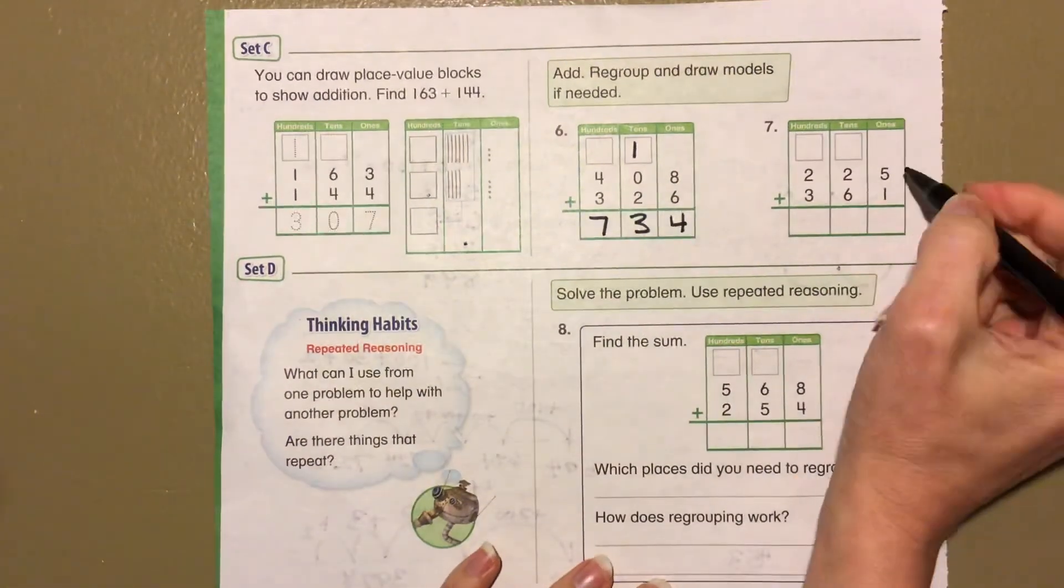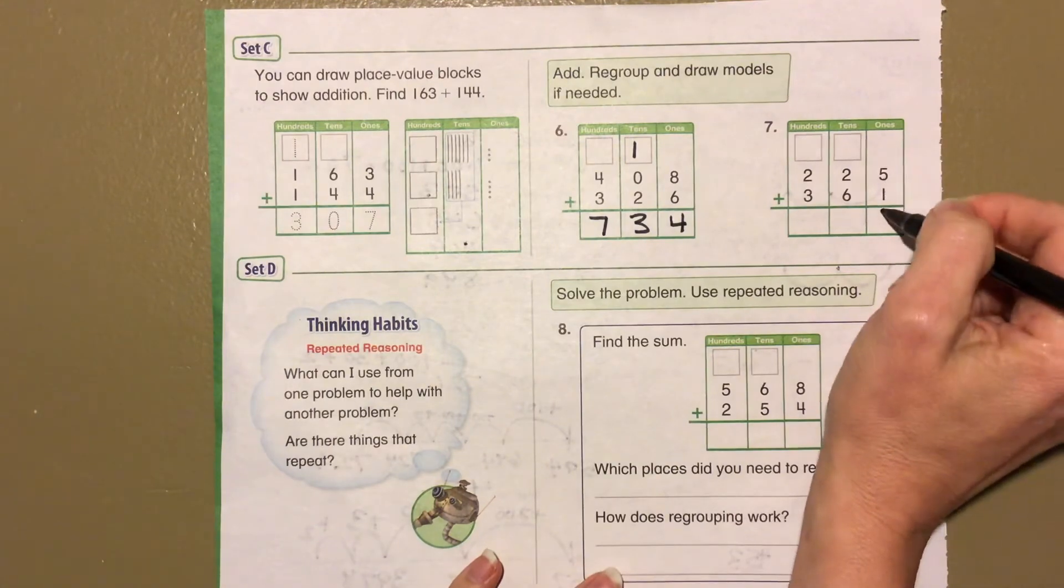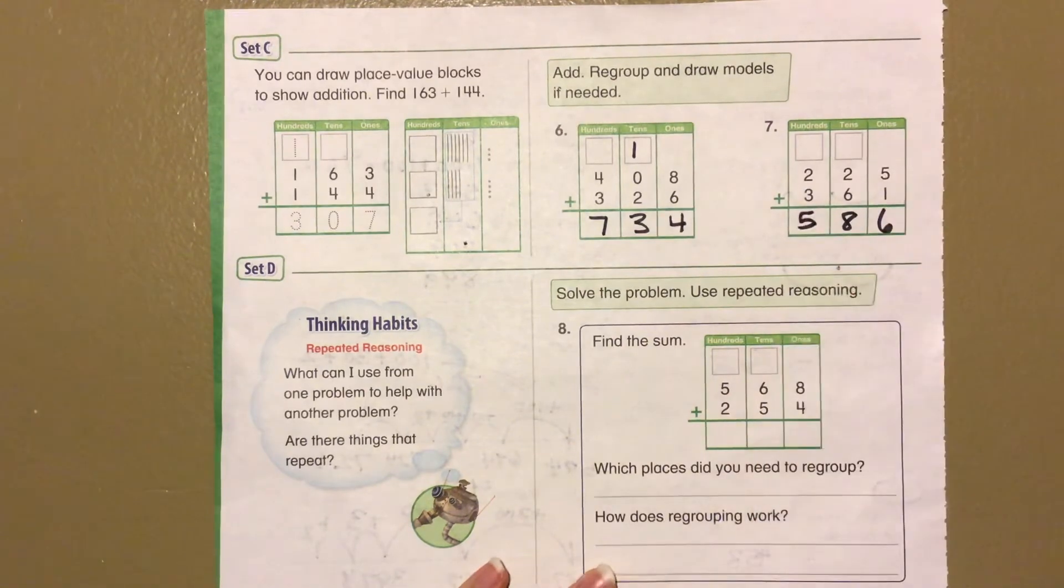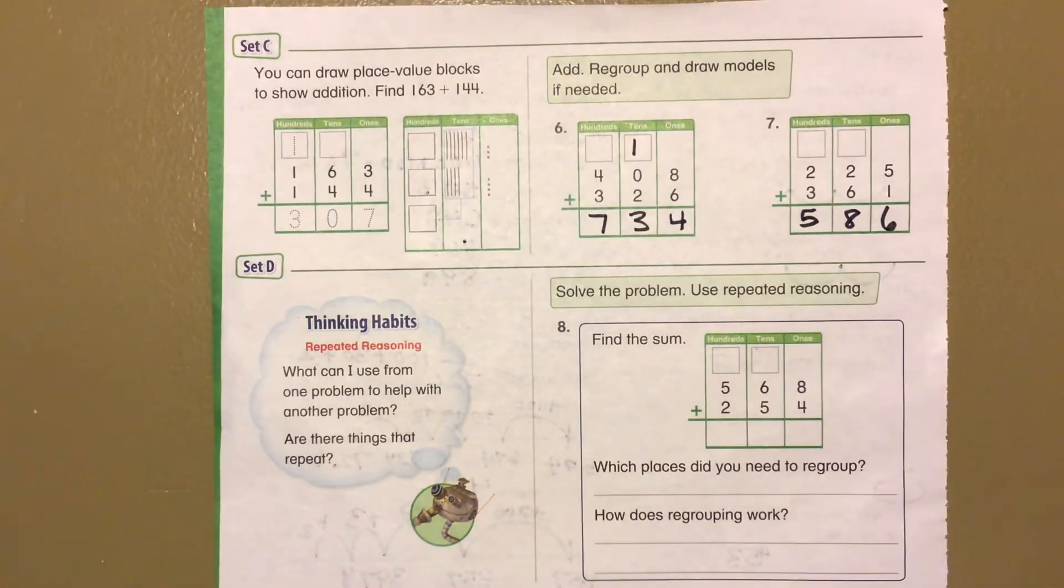And let's go into number 7. 5 plus 1 is 6, 2 plus 6 is 8, 2 plus 3 is 5. Look at that, we didn't even have to regroup it. 586.